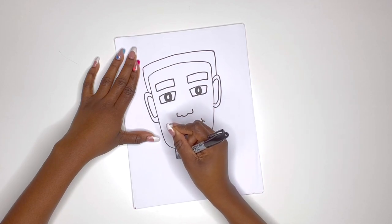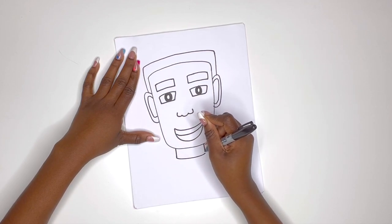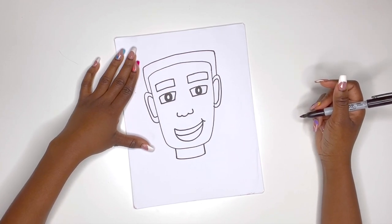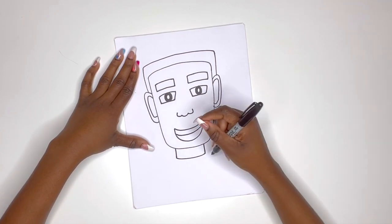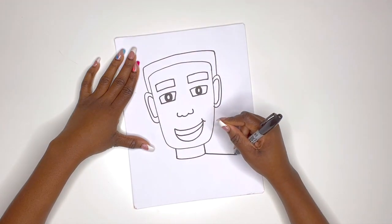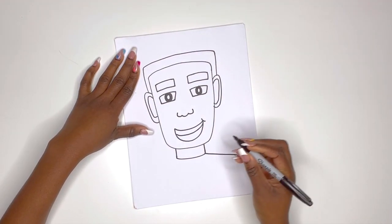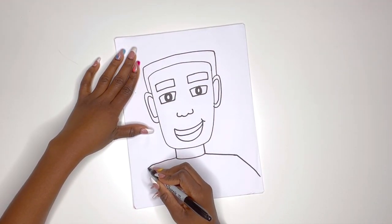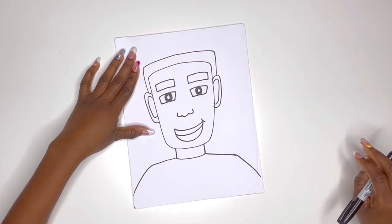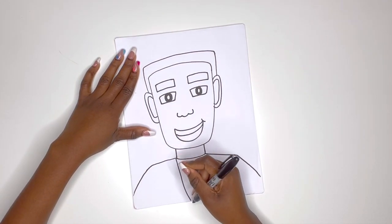drawing his neck. We're gonna have him wearing a nice suit, just like he used to wear when he was president. So I'm gonna curve down all the way to the edge of my paper for his shoulders. Then I'm